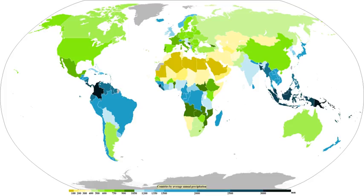Moisture that is lifted or otherwise forced to rise over a layer of sub-freezing air at the surface may be condensed into clouds and rain. This process is typically active when freezing rain occurs. A stationary front is often present near the area of freezing rain and serves as the focus for forcing and rising air. Provided necessary and sufficient atmospheric moisture content, the moisture within the rising air will condense into clouds, namely stratus and cumulonimbus. Eventually, the cloud droplets will grow large enough to form raindrops and descend toward the earth where they will freeze on contact with exposed objects.